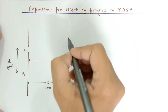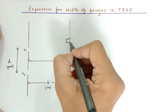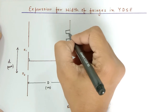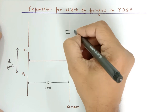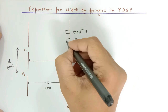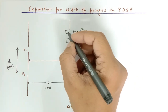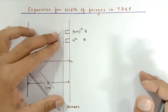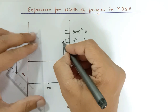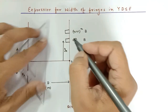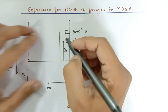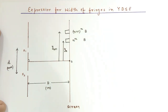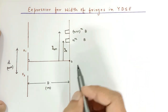Assuming two bright fringes: this is the nth bright fringe, and just above it we have the (n+1)th bright fringe, with a dark fringe in between. This nth bright fringe is at a distance y_n from the center, and the (n+1)th bright fringe is at a distance y_{n+1} from the center of the screen. Now I am going to write the condition for path difference for both of them.